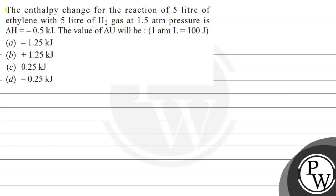Let's read this question. The enthalpy change for the reaction of 5 liters of ethylene with 5 liters of hydrogen gas at 1.5 atmosphere pressure is delta H equals minus 0.5 kilojoule. The value of delta U will be, and 1 atmosphere liter is equal to 100 joule is given. These are the following options.